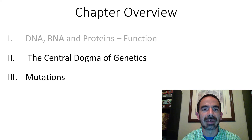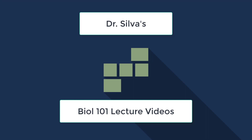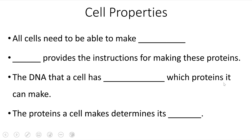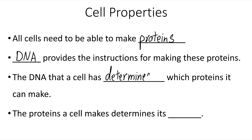The central dogma of genetics is made up of two main steps. All cells need to make proteins. DNA provides the instructions for making these proteins. The DNA that a cell has determines which proteins it can make. The proteins a cell makes determines its traits. The reason you're a human and not a cat or a dog is your DNA.